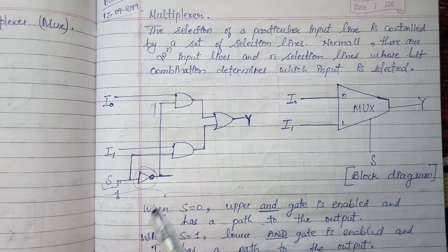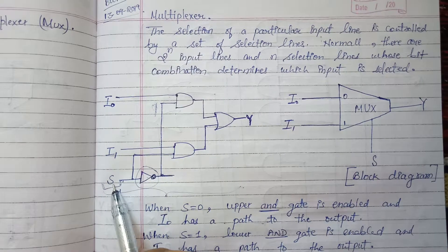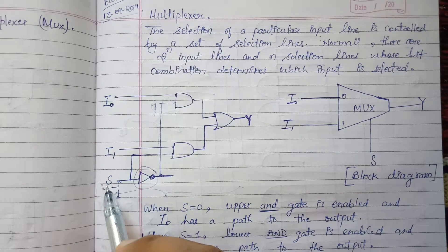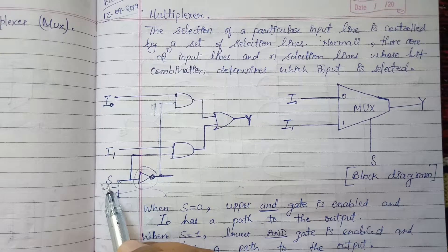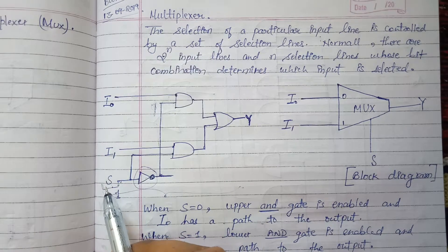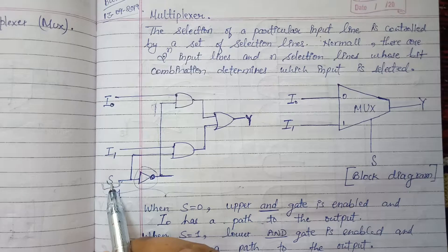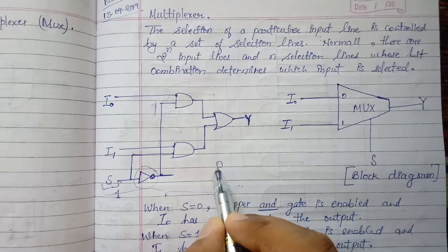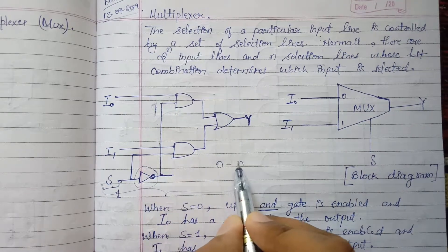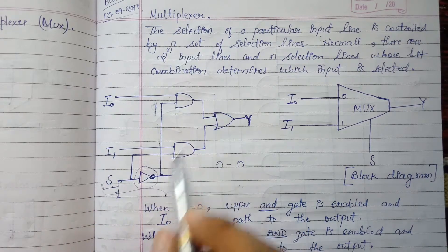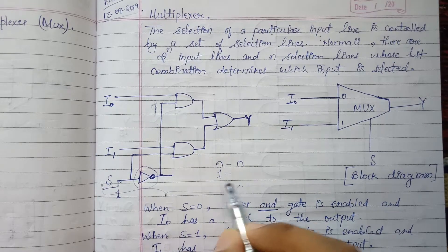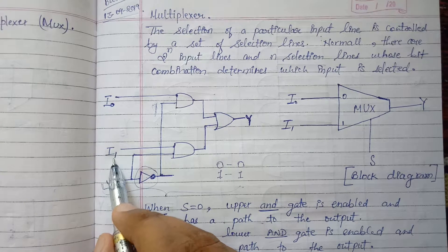The bit combination of the selection line decides which particular input will be the output. We take the binary value of the bit combination of the select input and match it to the decimal value. If S equals 0, its decimal equivalent is 0, so I0 will be the output. If the bit combination of S is 1, its decimal equivalent is 1, so I1 will be the output.